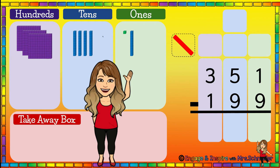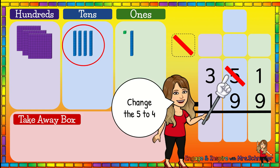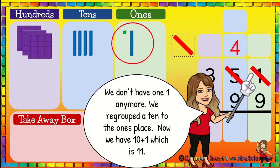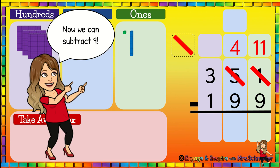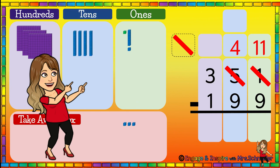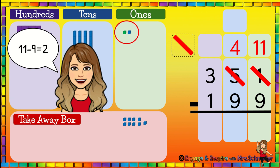So we took a ten from the tens place and regrouped it into the ones. Now we're going to cross out the five tens because we don't have five tens anymore — now we have four tens. So we're going to change the five to four. And we're going to cross out the one in the ones place because now we have ten plus one, which is eleven. Now we can subtract nine — eleven is more than nine, so now we have enough to give away. How many ones are left? Two. Eleven minus nine is two.